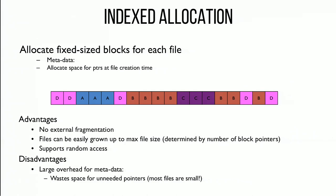Now, indexed allocation: we use fixed-size blocks and keep a pointer for every block of the file — just a fixed-size array of block pointers. The main challenge is how large your file is going to get. You either waste a lot of space for this fixed array, or you can only support very small files. It has no external fragmentation and supports random access with simple calculations, but requires a lot of space for metadata.